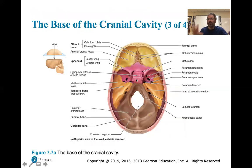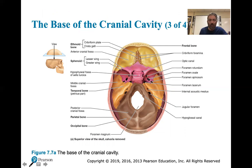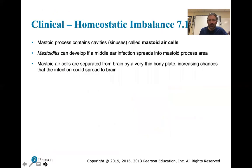Looking down at the skull from above: remember your brain is sitting in this. Orient yourself - anterior, posterior - and think about what's sitting in here and what functions are associated with each area. Clinically, the mastoid process contains cavities or sinuses called mastoid cells.